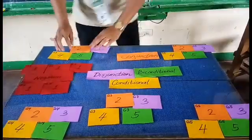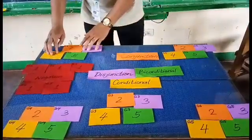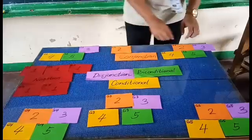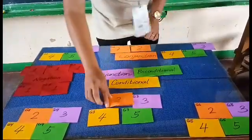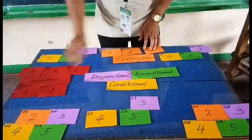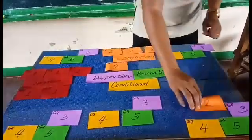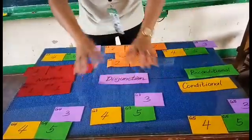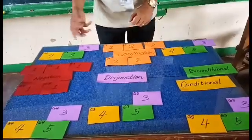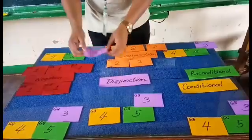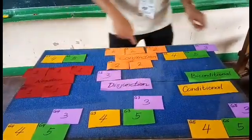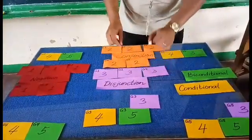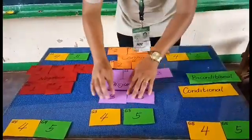For conjunction, the orange color students — student number two from each group — proceed to the conjunction expert group. This includes student number two from groups one through five. For disjunction, student number three from each group forms the disjunction expert group, covering groups one, two, three, four, and five.